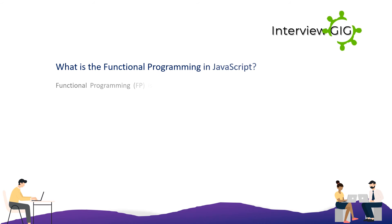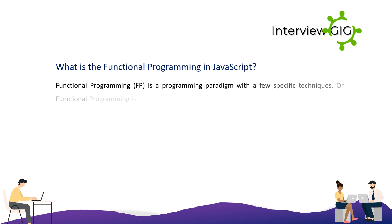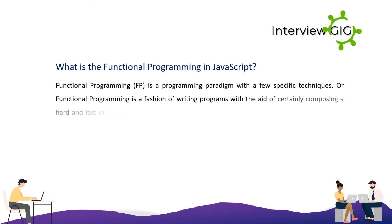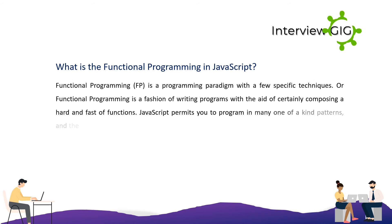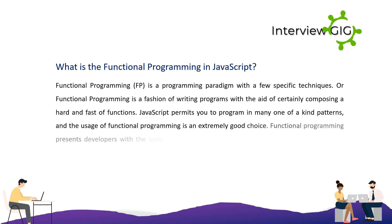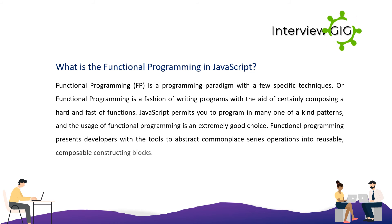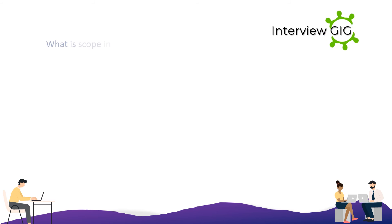What is functional programming in JavaScript? Functional programming (FP) is a programming paradigm with specific techniques, or a style of writing programs by composing a set of functions. JavaScript allows you to program in many different patterns, and using functional programming is an excellent choice. Functional programming provides developers with the tools to abstract common operations into reusable, composable building blocks.